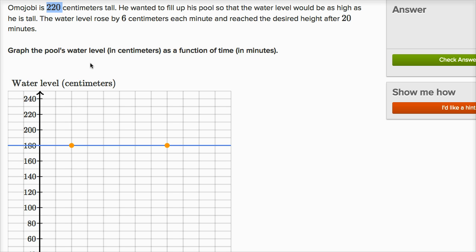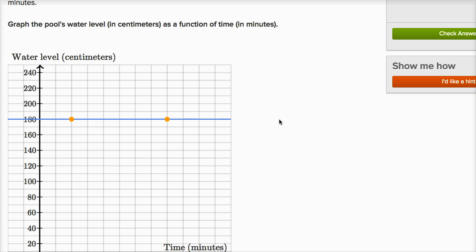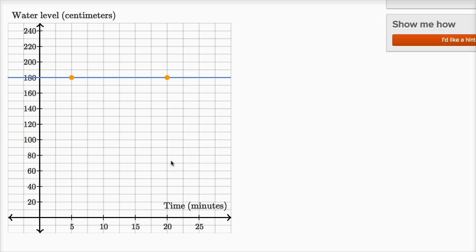So they're essentially telling us that the water level of the pool after 20 minutes is 220 centimeters. So we can plot that. After 20 minutes, we could plot that point right there. After 20 minutes, we're at 220 centimeters. So we would be right there.